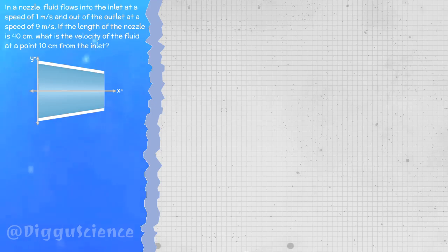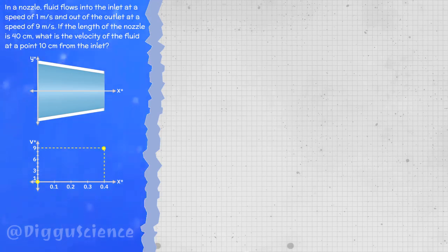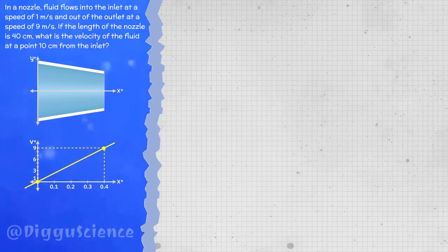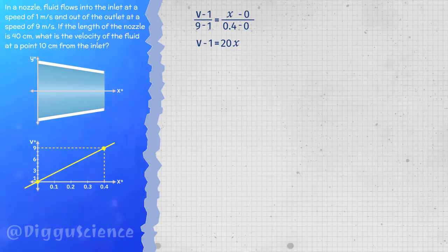First, assume the fluid velocity is a linear equation. We can write velocity on the vertical axis. Point one is at the inlet with coordinates (0, 1), and point two is at the outlet with coordinates (0.4, 9). Connecting these two points forms a straight line. Using the straight-line equation through two points, we get: v minus 1 equals 20x, so v equals 20x plus 1.